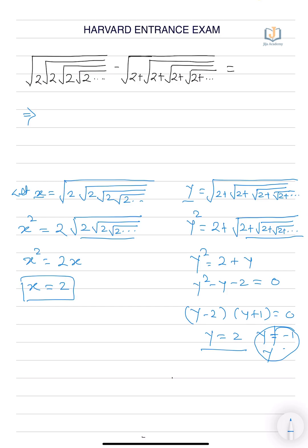We got 2x minus y, that is 2 minus 2, equals 0. So, we got the answer is 0. If you like this video, please like and subscribe to the Jijo Academy channel. Thank you.